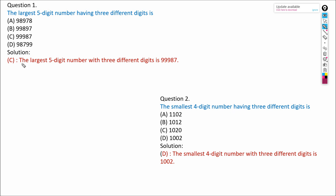Our answer for question one will be C. The second question: the smallest four-digit number having three different digits. The smallest four-digit number having three different digits is 1002. The three different digits used are 1, 0, and 2 — these are the three digits which can be used to write the smallest four-digit number. Therefore our answer will be 1002.